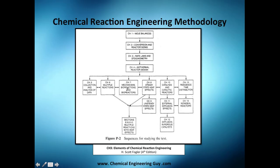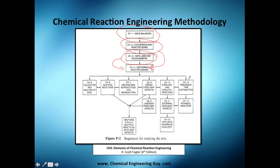Now if you've seen the course, we already checked out chapter 1 which is molar balances in reactors, then we saw a little bit about conversion and reactor sizing, and now before going to isothermal design we need to check out what's the rate law and the stoichiometry behind that. After that we're going to check out the isothermal design, which is the basis for all this.